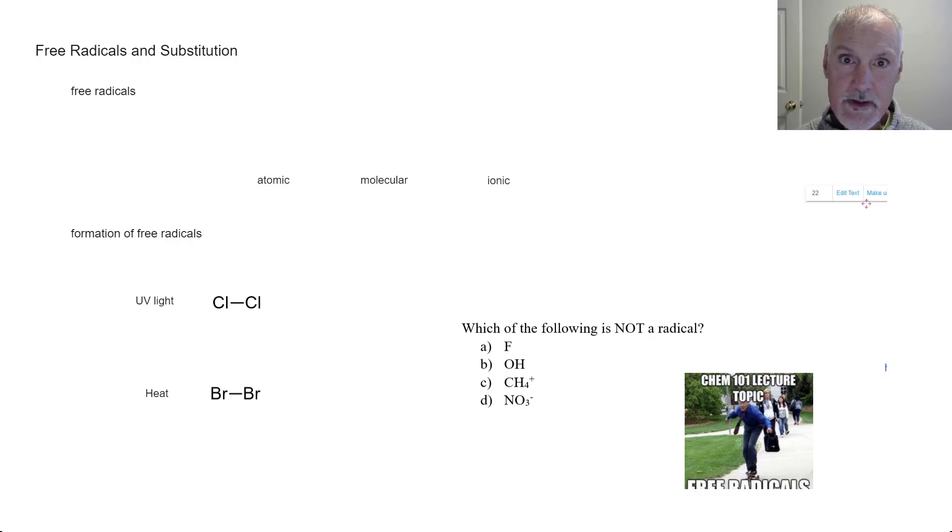But first off, what's a free radical? Well, a free radical is a species that contains at least one unpaired electron and they can come in three forms.